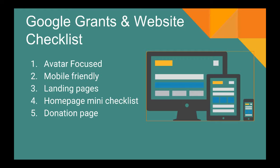We're going to briefly go over five topics here today. One is, is your nonprofit's website avatar-focused? Is it mobile-friendly? Are you using landing pages, which is a very powerful tool and one of the most important things your nonprofit needs to do when using Google Grants? We'll also go over what we call the homepage mini-checklist, and lastly your nonprofit's donation page. Each one of these five topics could have a whole entire presentation in and of itself.